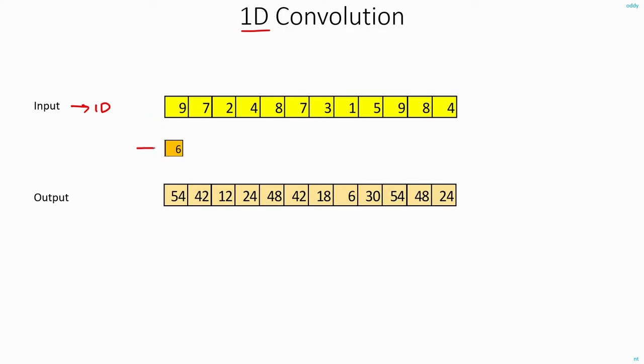This is my input vector and I will just multiply this vector by a number. And if I do the multiplication, I will get 9x6 which is nothing but 54, 7x6 is 42 and so on. I keep repeating these steps until I reach the end of the array. Basically I am multiplying all the array elements with this number. So this is the simplest case of convolution.